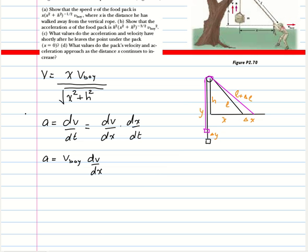For part b, we have to find the acceleration. Acceleration is the rate of change of velocity, so a = dv/dt. We can write dv/dt = dv/dx times dx/dt. Since dx/dt = v-boy, we have acceleration = v-boy times dv/dx. We know v as a function of x, so we need to find dv/dx.